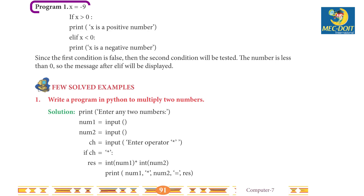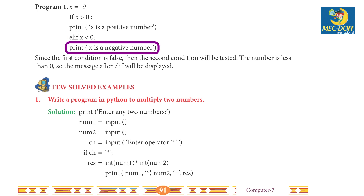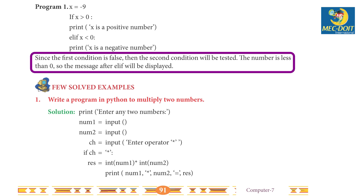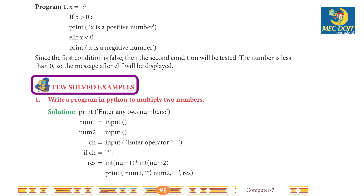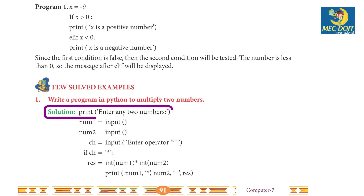The Zen of Python is a poem written by Tim Peters to highlight the philosophies of Python. Program: x = -9. If x > 0: print 'x is a positive number'; elif x < 0: print 'x is a negative number'. Since the first condition is false, the second condition will be tested. The number is less than zero, so the message after elif will be displayed.